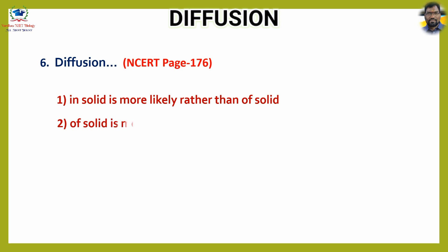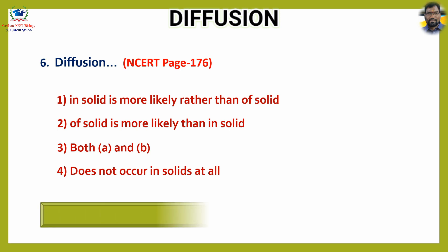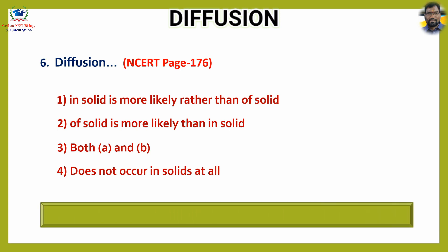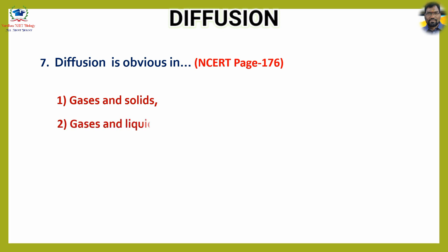Question number six: Diffusion — options: one, in solid is more likely rather than a solid; two, of solid is more likely than in solid; three, both A and B; four, does not occur in solids at all. The answer is option one, in solid is more likely rather than a solid.